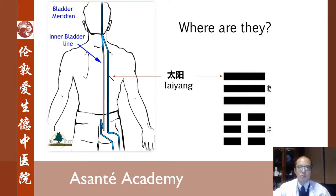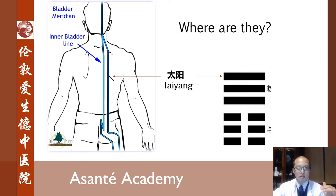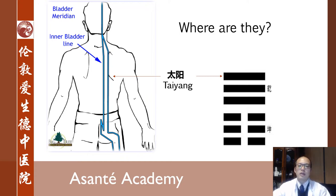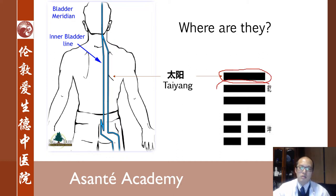We talked about the six meridians describing the structure of the human body from the upper part to the lower part. Now let's talk about the six meridians describing the structure of the human body from back to front. In Shang Han Lun, Zhang Zhongjing said that Taiyang is the yang meridian, and Shaoyang is the half-yin, half-yang meridian.